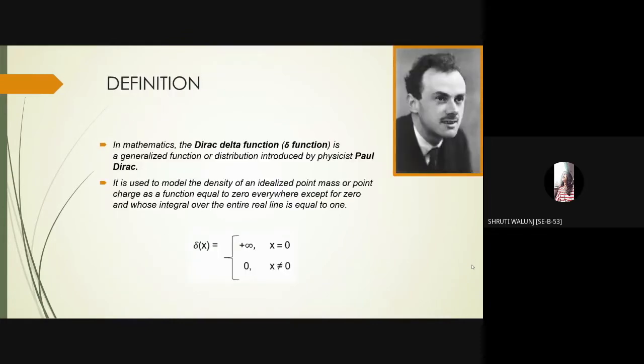Definition: In mathematics, the Dirac delta function is a generalized function or distribution introduced by physicist Paul Dirac. It is a generalized function that can be defined as the limit of a class of delta sequences.